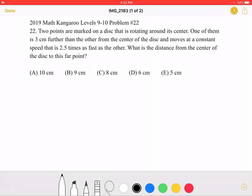Two points are marked on a disk that is rotating around its center. One of them is 3 centimeters further than the other from the center of the disk and moves at a constant speed that is 2.5 times as fast as the other. What is the distance from the center of the disk to this far point? A, 10 centimeters, B, 9 centimeters, C, 8 centimeters, D, 6 centimeters, or E, 5 centimeters.